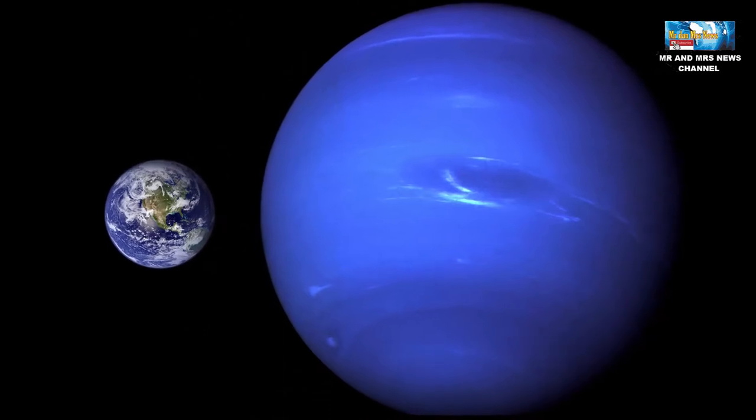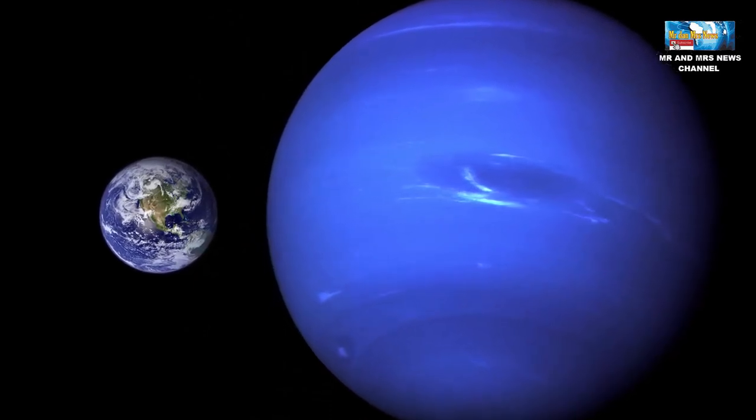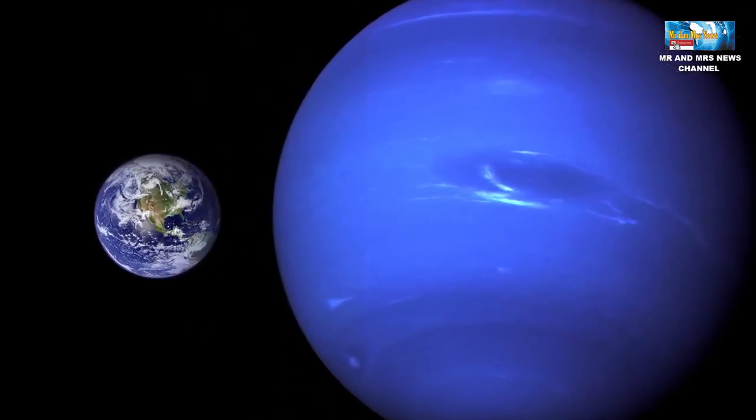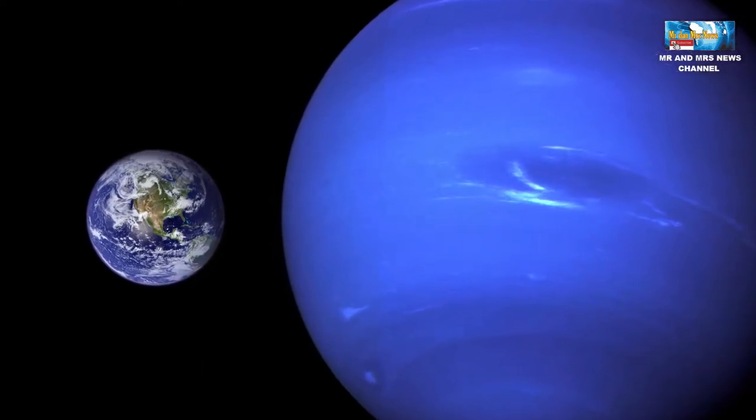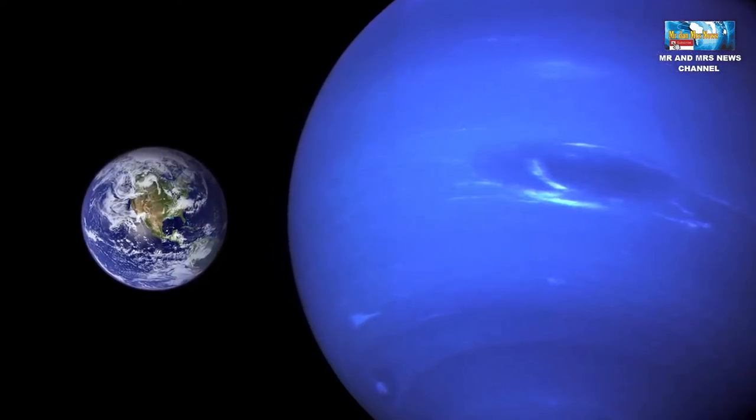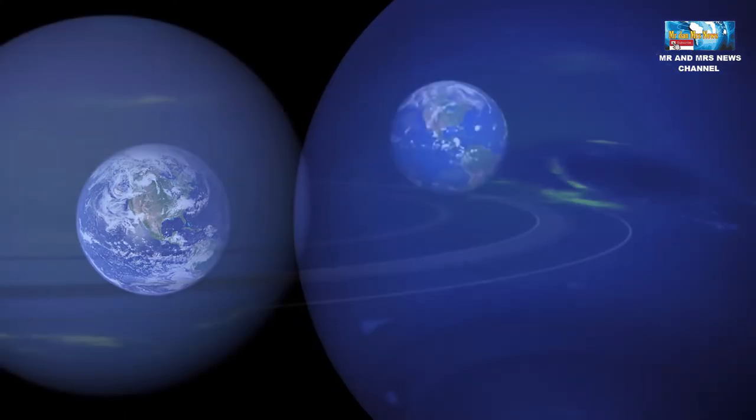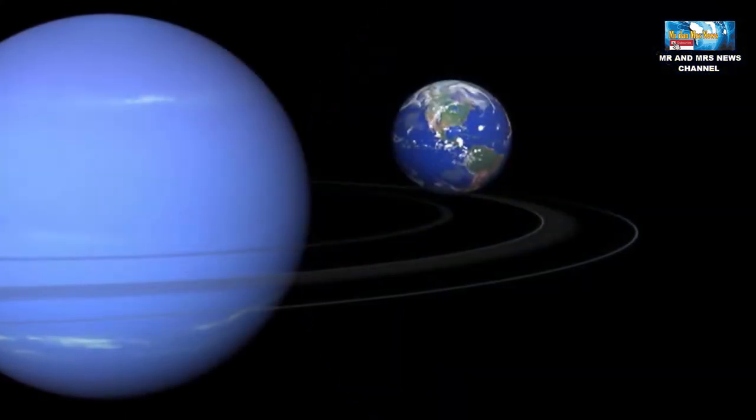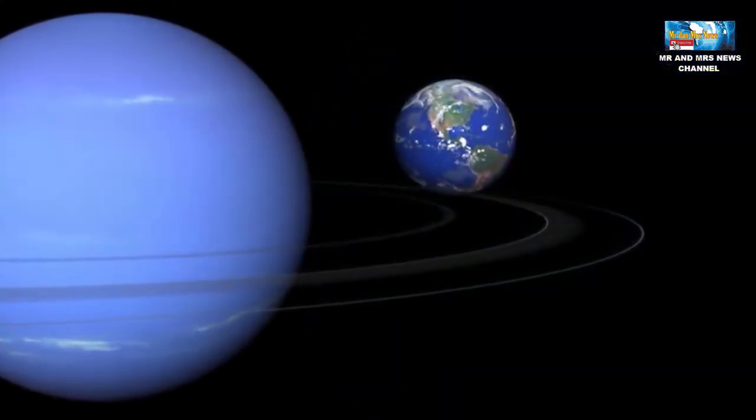Earth is not the only blue planet in the solar system. Besides Earth, Neptunus also has a blue color. If Earth is blue because of its atmospheric composition and oceans covering 70% of its surface, Neptune's blue color is caused by its atmospheric composition.